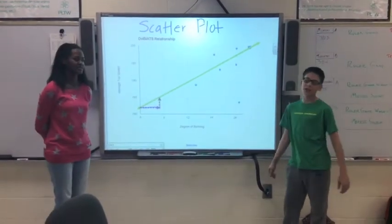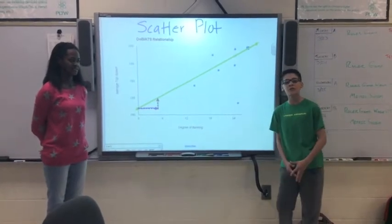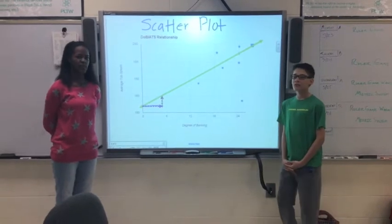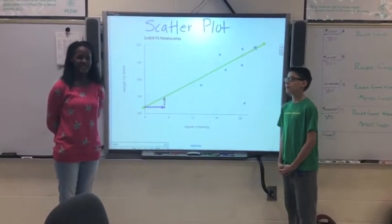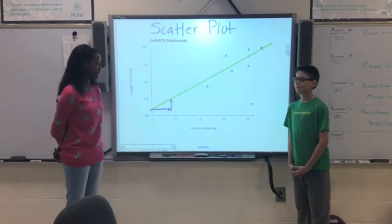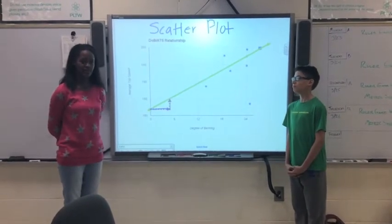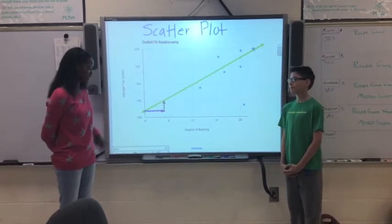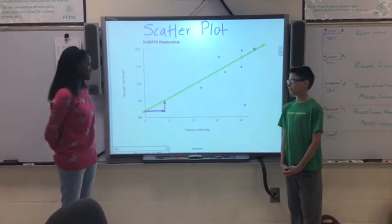For this problem we used our 6th grade standard unirate and we also used an 8th grade standard that focuses on scatter plots. We came up with a way to organize our information by using a graph called the scatter plot. The scatter plot shows all types of information based on the degree of banking and the average top speed.